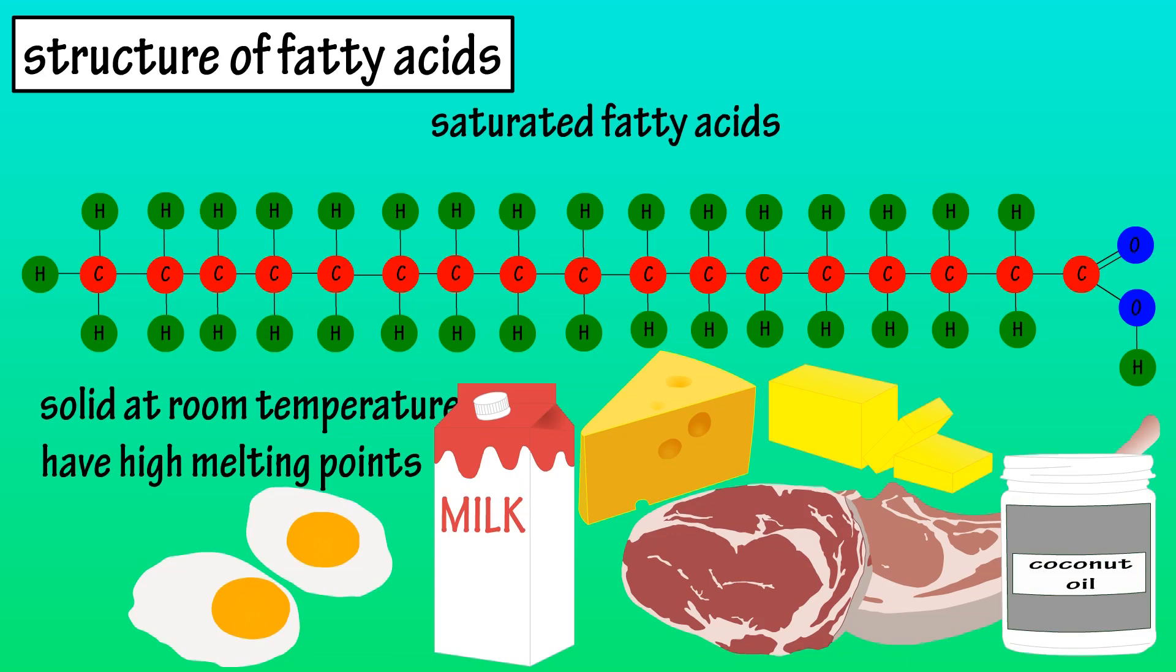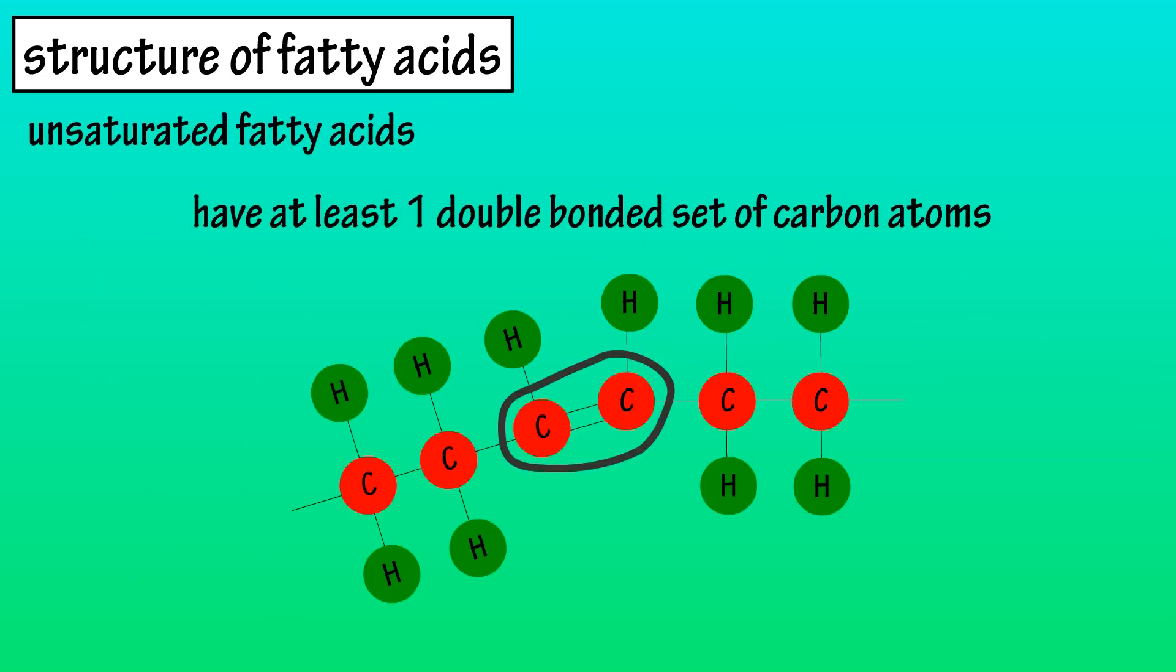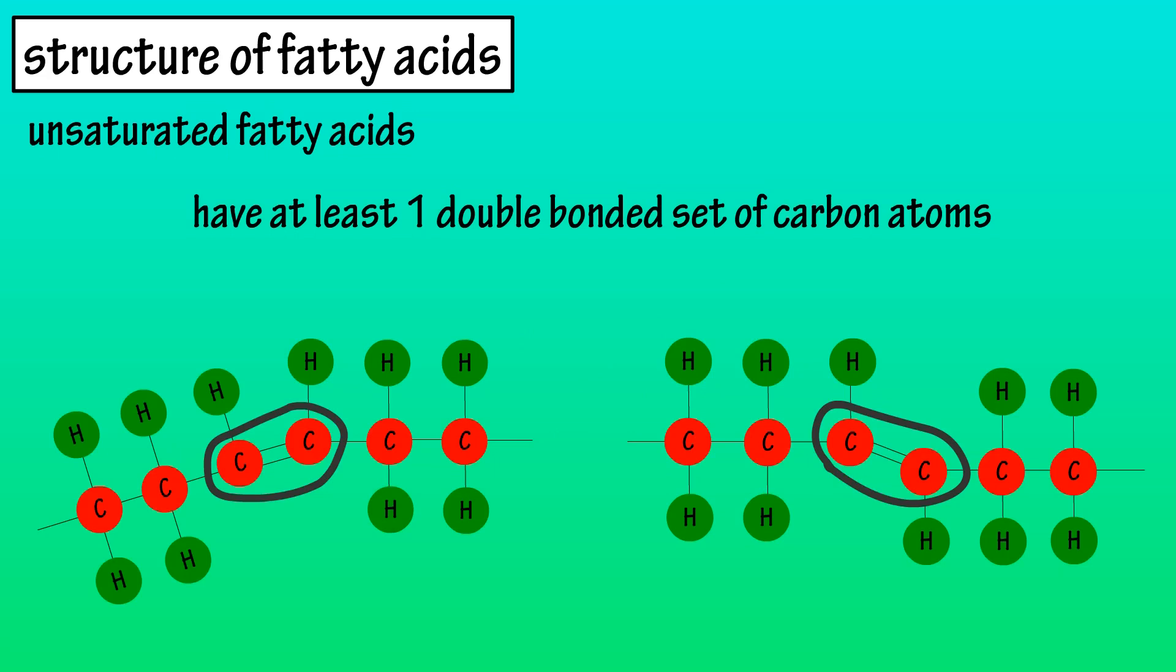Unlike saturated fatty acids, unsaturated fatty acids have at least one double bonded set of carbon atoms in their structure. This double bond can take on one of two formations: a cis configuration or a trans configuration.